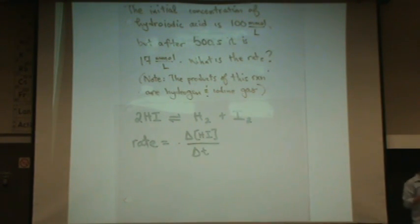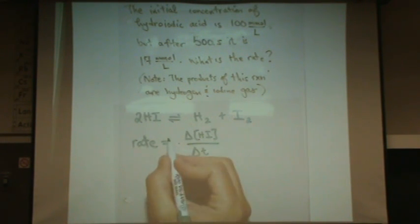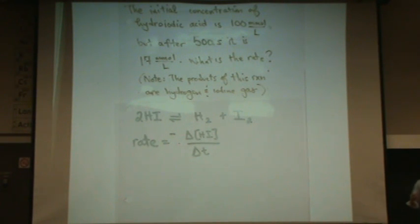What we also have to do to get the, really, what you'll find is called the average rate, is to put a minus sign because we're losing it. So we're losing reactants, so that minus represents loss.